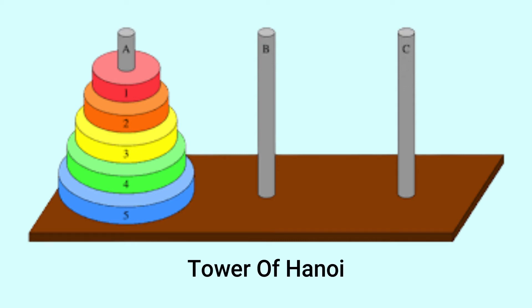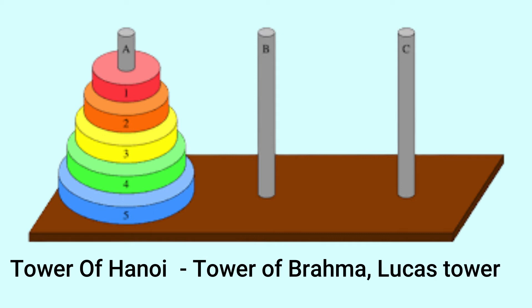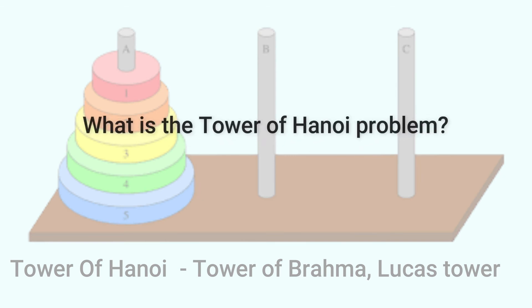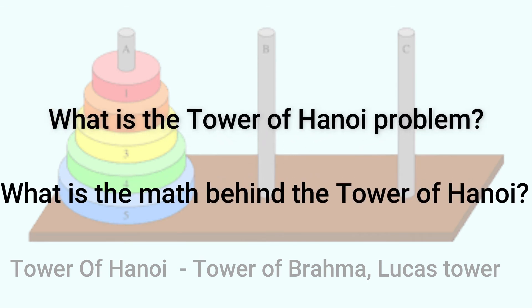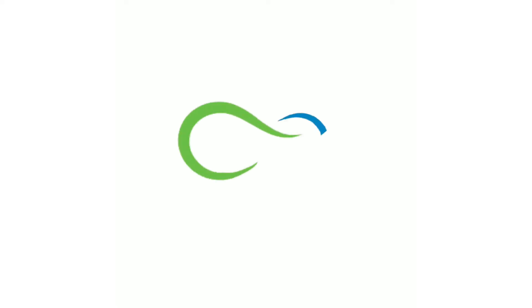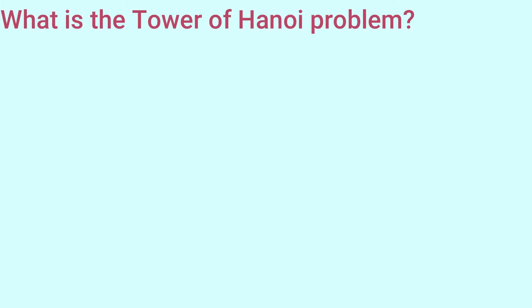The Tower of Hanoi, also called the Tower of Brahma or the Lucas Tower, was invented by French mathematician Edward Lucas in the 19th century. Let us see what is the Tower of Hanoi problem and what is the myth behind it. So let us start with the first question: what is the Tower of Hanoi problem?